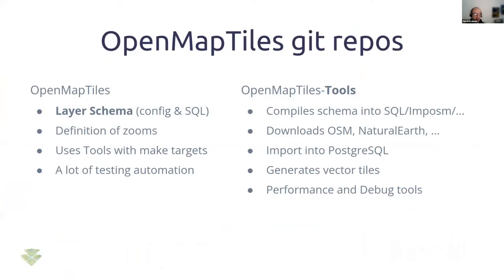OpenMapTiles has two fundamental Git repos. There's the OMT repo itself, which is the configuration of the tiles — the SQL, data configuration, Imposm configuration, and many other things on the data side. And there are the tools: a number of Python and other scripts plus Docker Compose that creates all the tooling necessary to build it. You can use OpenMapTiles tools for your own custom layers, which is why they're kept as two different repos.